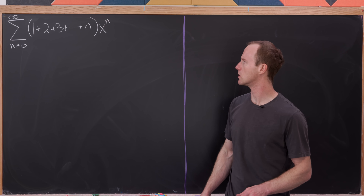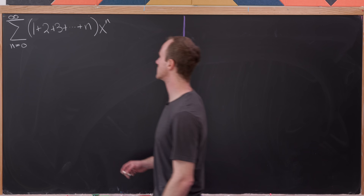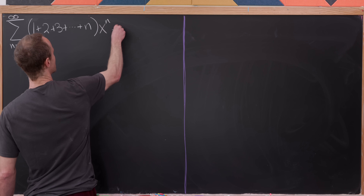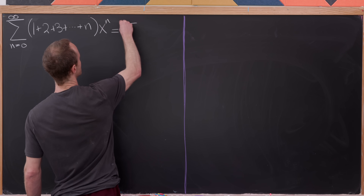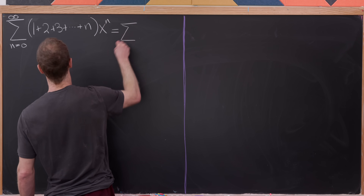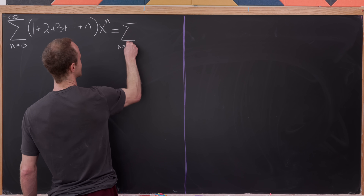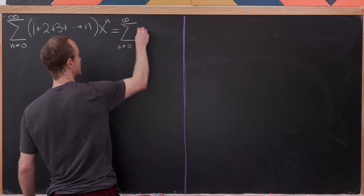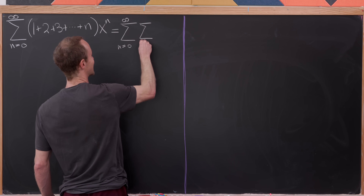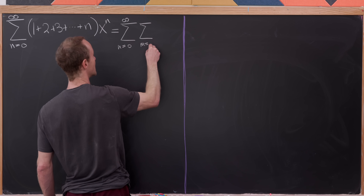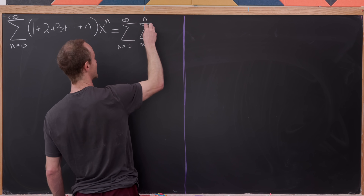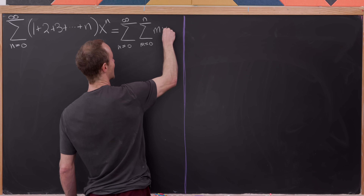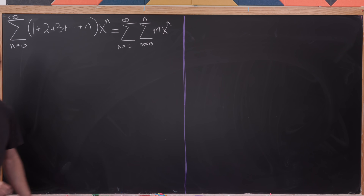Next, I'm going to write this in a more condensed form: the sum as n goes from zero to infinity, and then the sum as m goes from zero to n, of m times x to the n.